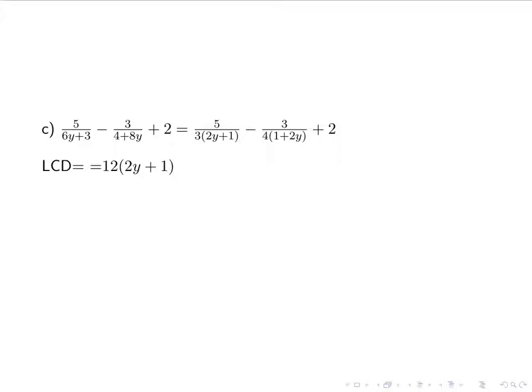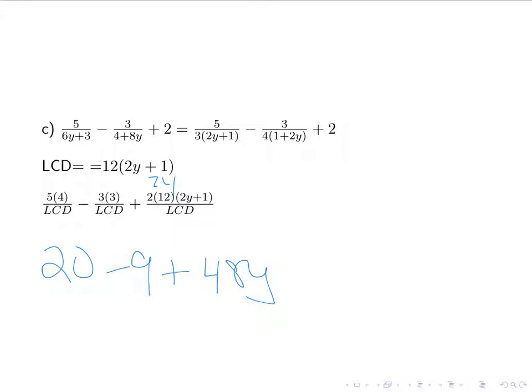So for my first term, I don't have the 4, so I'm going to be multiplying by 4. For my second term, I don't have the 3, so I'm going to multiply by 3. My third term, I don't have any of it, so I'm going to multiply by the entire thing. We're going to simplify it. So I have 20 minus 9 plus 2 times 12 is 24. 24 times 2y is 48y, 24 times 1 is 24. Combine my like terms, which in this case are my constants, and I end up with 48y plus 35, over my LCD, 12 times 2y plus 1.